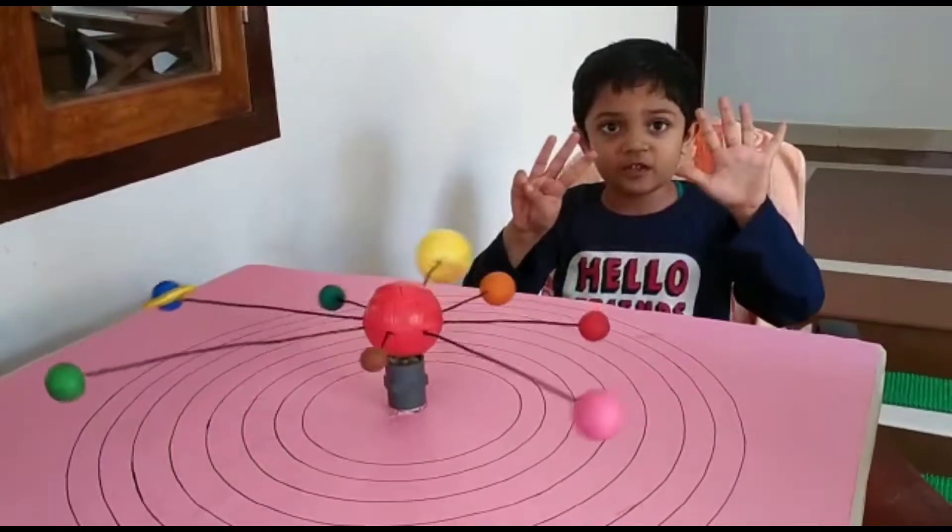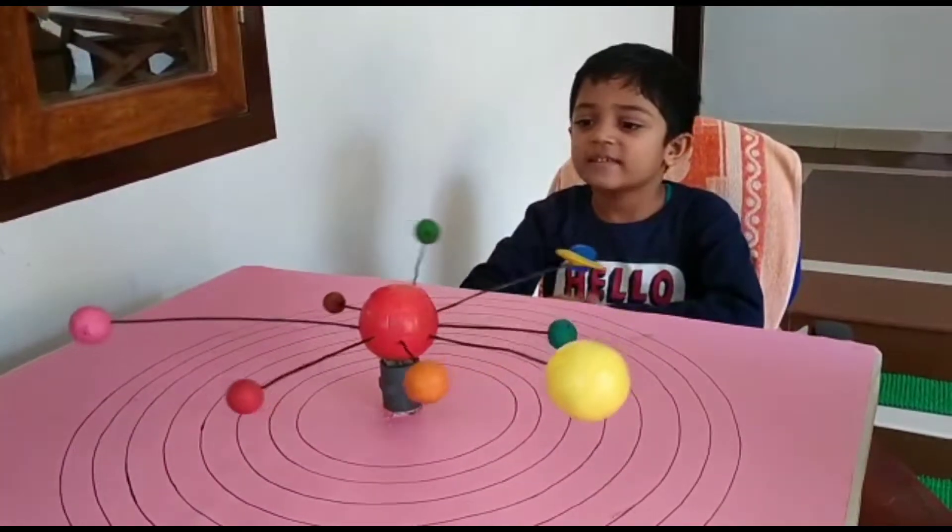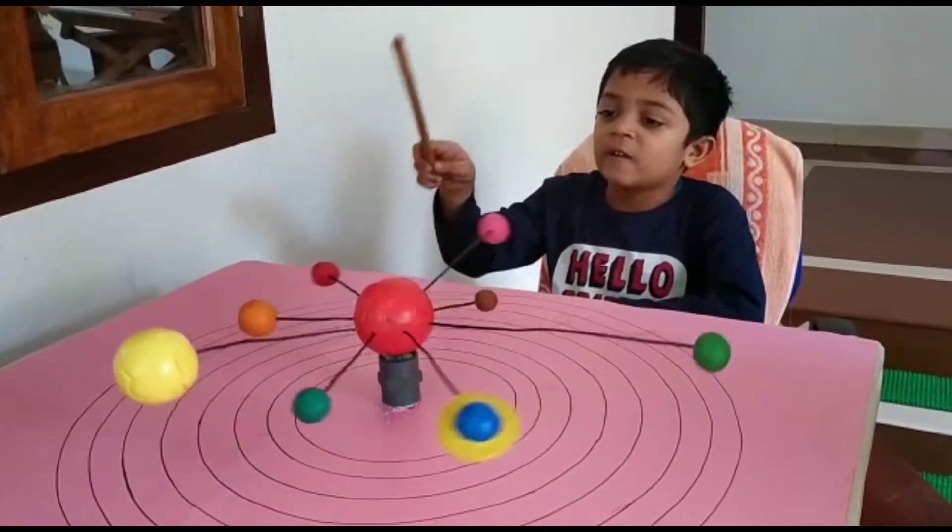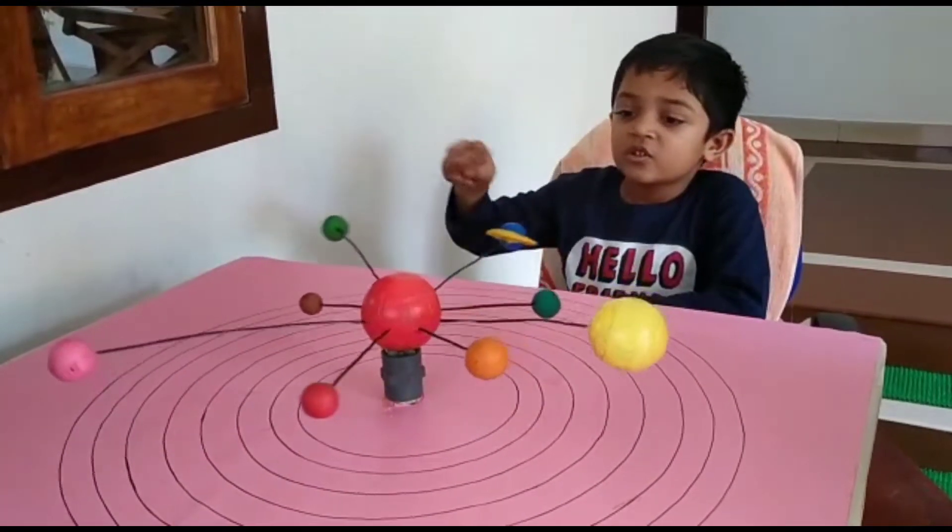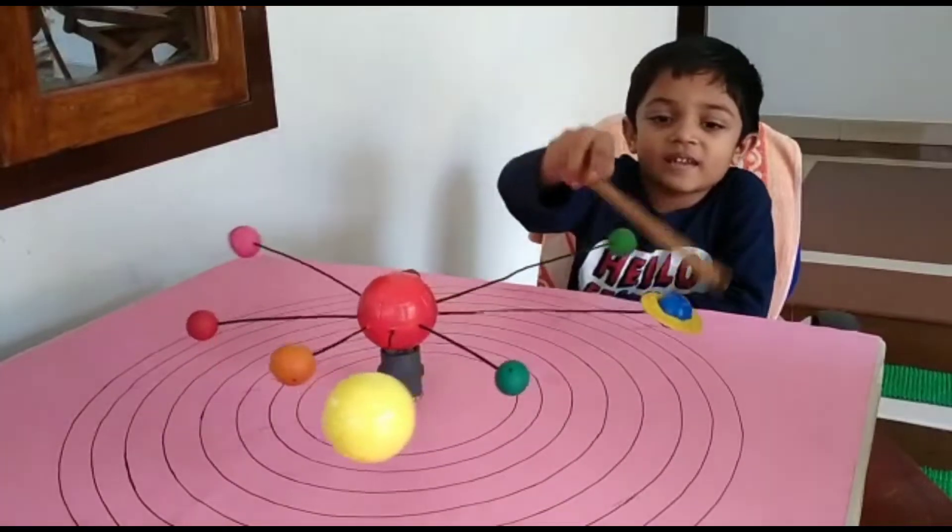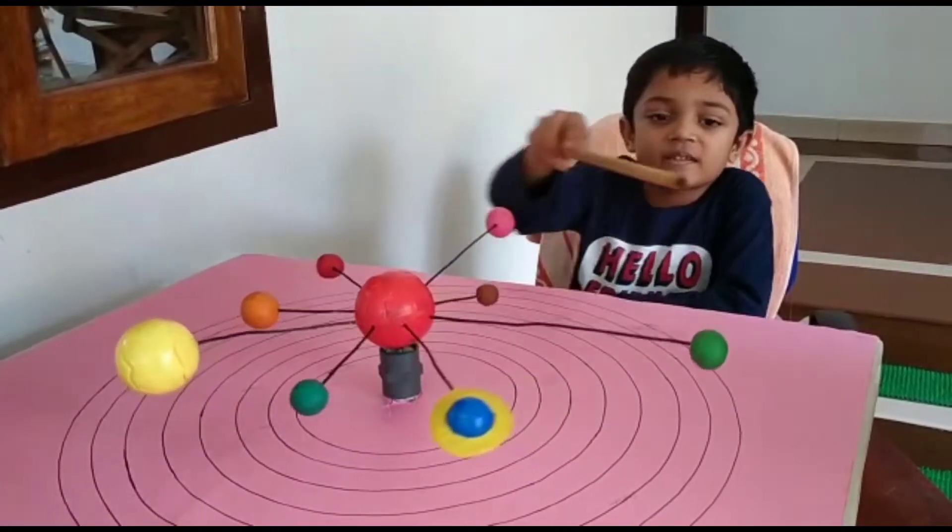There are 8 planets. The planets are Mercury, Venus, Earth, Mars, Jupiter, Saturn, Uranus, Neptune.